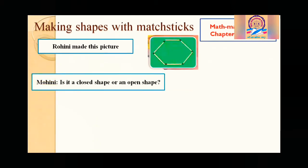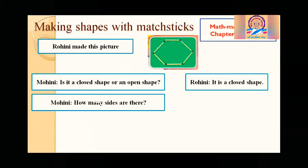Now, Mohini. They can ask questions. So Mohini asks, is it a closed shape or an open shape? Rohini says it is a closed shape. It is closed from all sides. Mohini asks, how many sides are there? How many sides are there? You can see, this is an hexagonal, six sides. Rohini says it has six sides.